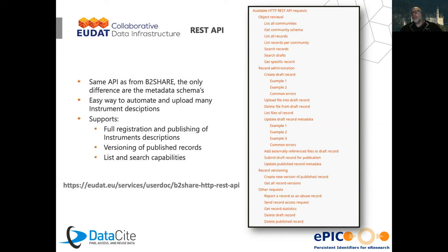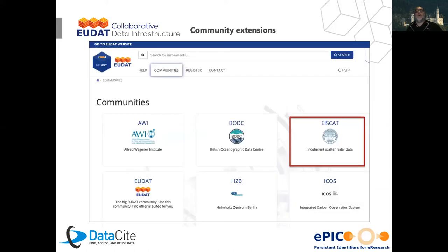We can also provide an API so that registration of persistent identifiers and metadata can be done programmatically. If you have many different instruments, doing this manually via a website is very cumbersome — so if you can automate it, it's a lot easier. For example, we talked with the EPOS community, which has about 6,000 different sensors located across Europe. Registering 6,000 instruments by hand is not attractive, but since they already have all this information in their database, they can extract it, generate a script, and automatically register metadata within the registry and receive persistent identifiers.